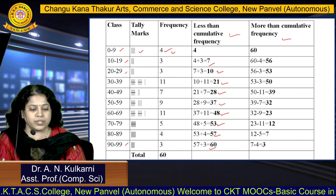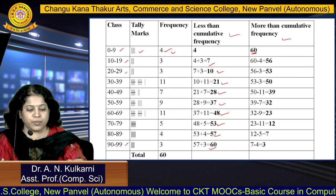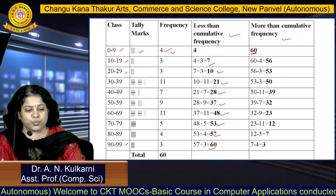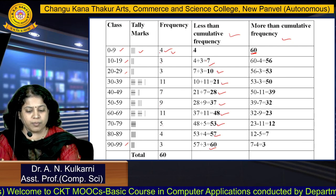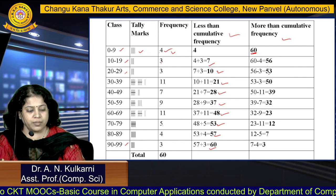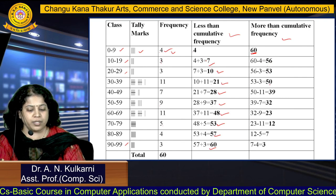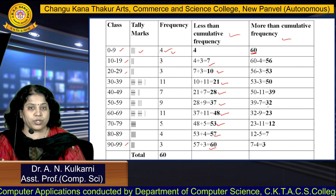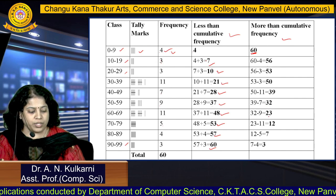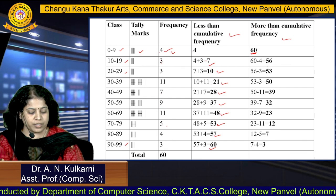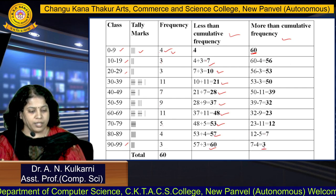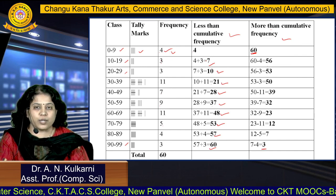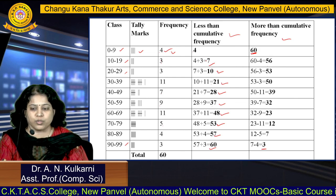For the more than cumulative frequency, the total is 60. Subtracting from highest to lowest: 60 − 4 = 56; 56 − 3 = 53; 53 − 3 = 50; 50 − 11 = 39; 39 − 7 = 32; 32 − 9 = 23; 23 − 11 = 12; 12 − 5 = 7; and 7 − 4 = 3. In this way we can calculate both less than and more than cumulative frequencies.